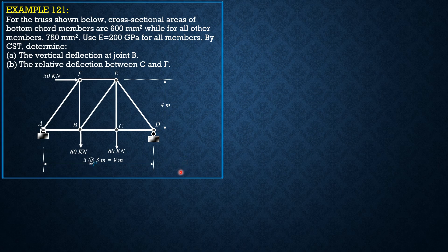First, let's call this force P — because there's already a force here which is downward. We're going to apply a downward force, assuming downward positive. Since there is already a 60 kN force, we can make this the P. If the result is positive, then the vertical deflection at B is really downward, which is expected.